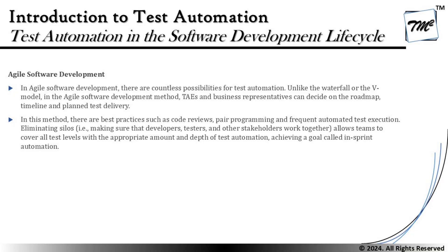Moving on, agile software development talks about working in iterations, which is different from waterfall and V model, with the team working on innovations and implementing things fast. In agile, TAE — Test Automation Engineers — and business representatives can decide on the roadmap, timeline, and planned test delivery. The scope of automation is agreed between the business representative and the test automation engineers. We try to achieve maximum automation possible in agile, with the goal of DevOps where 100% automation reduces manual activities. However, understanding scope, schedule, and cost gives a clearer definition, and it is not necessary that we blindly automate everything.